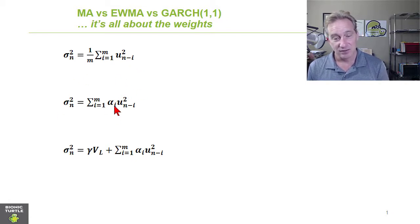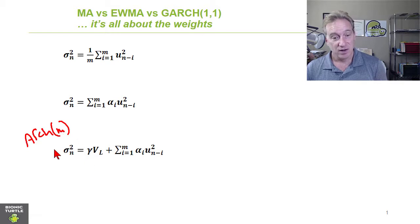But now we've generalized and we've made the weights explicit. And we can take another step to the Arch-M model or Arch-1 model, where the variance then is the same here, general expression for squared returns that are weighted however we want to weight them.